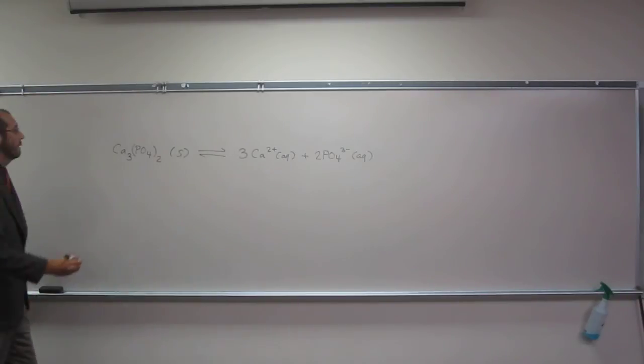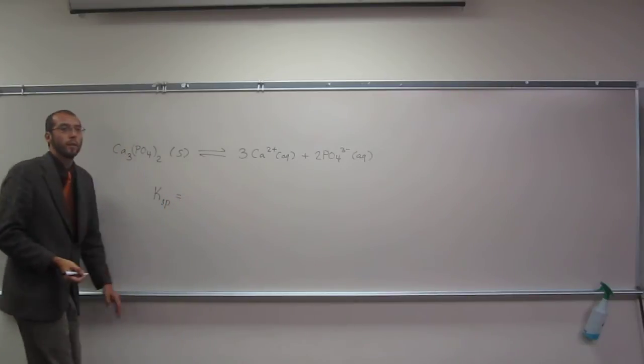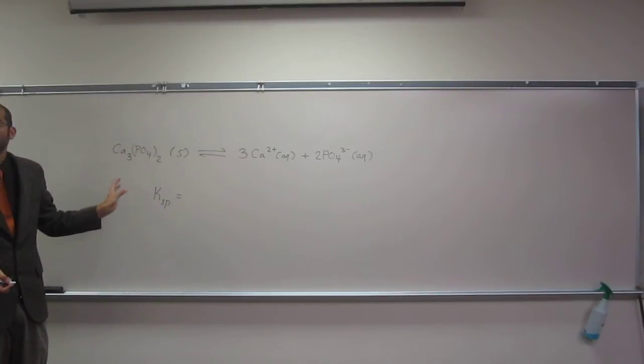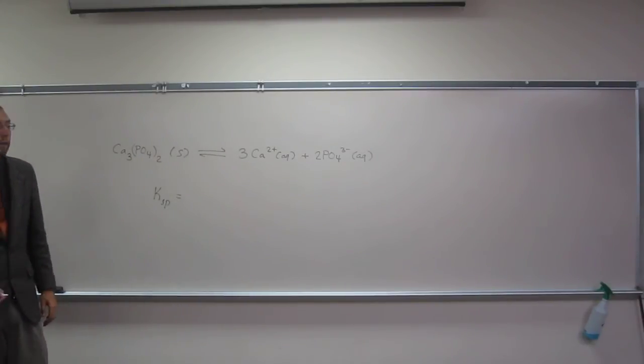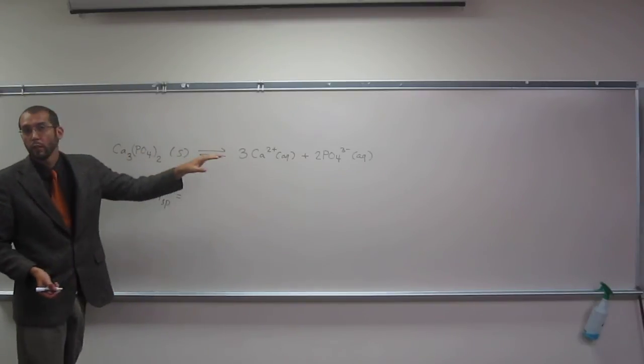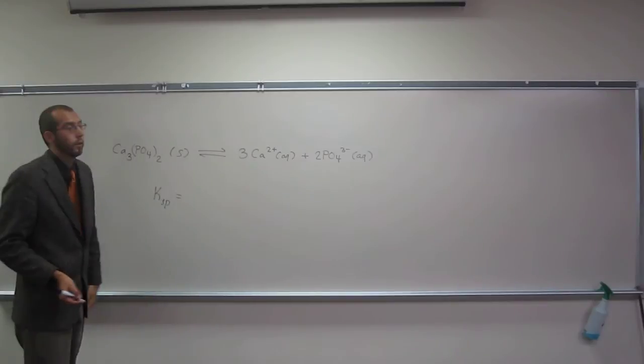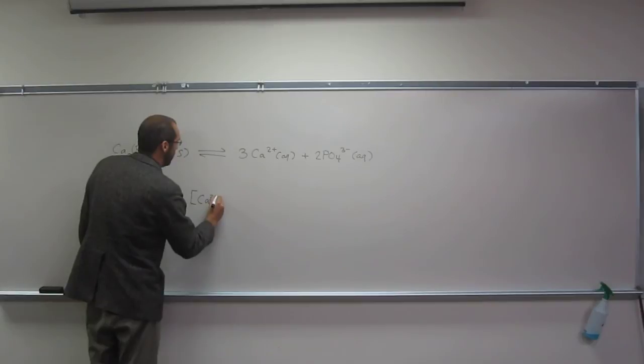So how do we do Ksp? Just like all the other Ks, it's going to be the products divided by the reactants, if the products and reactants are not liquids and solids. So if we look, there's only solids per reactant, so it's only going to have the product concentrations involved. So in this case, it's going to be Ca2+ cubed.